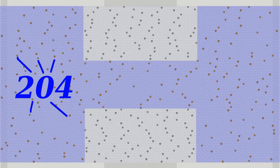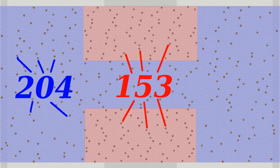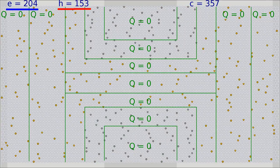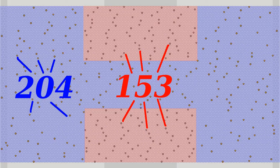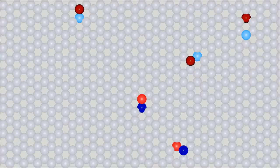There are 204 pentavalent impurity atoms inside the N-doped area and 153 trivalent impurity atoms inside the P-doped gate area, hence there are 204 extra electrons and 153 holes inside the layer of the crystal lattice. The concentration of impurity atoms is significantly higher than inside real devices, to be able to visualize the processes. Only a few postulations are sufficient to calculate the virtual JFET.